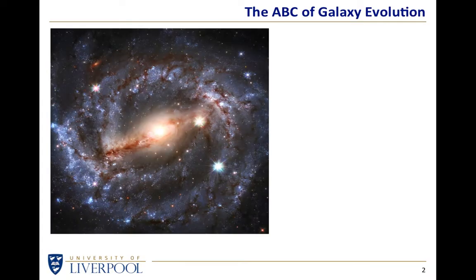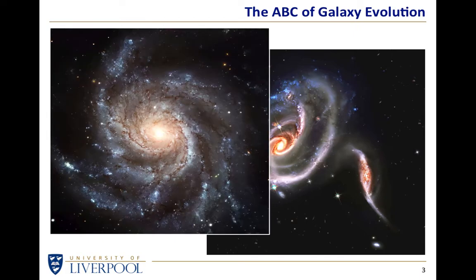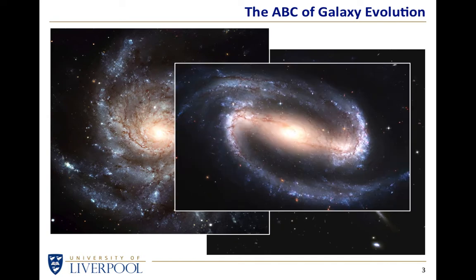We've all seen galaxies, either for real through a telescope, or in pictures from telescopes around the world. Some are beautiful structures — individual galaxies, pairs of galaxies, or galaxies interacting with each other. A lot are beautiful spiral galaxies with multiple spiral arms. Some look a little different with a couple of arms. There are other galaxies — elliptical galaxies — which don't quite have the same aesthetic appeal. But the question is: where did all these galaxies come from?